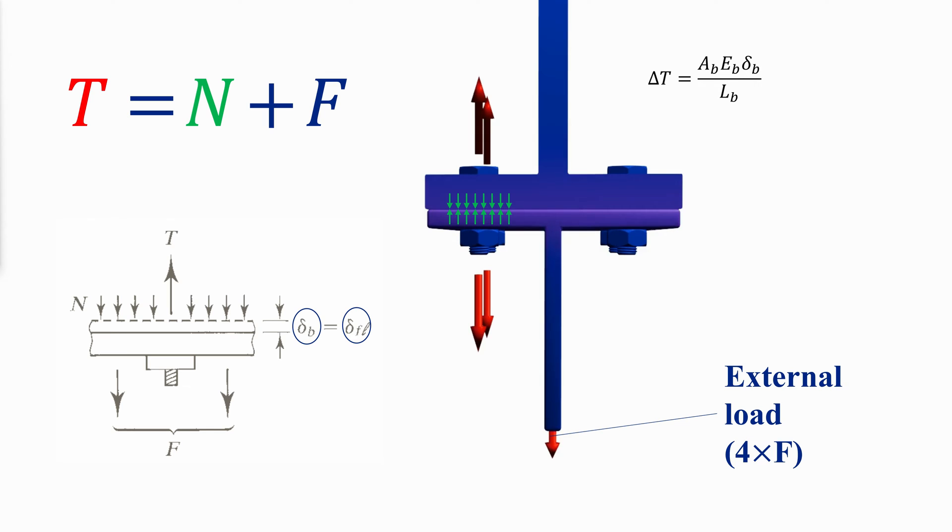The expressions for the change in the tension of the bolt with respect to the amount of elongation and the relationship between the change in the compressive force between the flanges and contraction in the flange are shown. The ratio between the change in tensile force in the bolt and the change in the compressive force between the flanges can be written as follows.